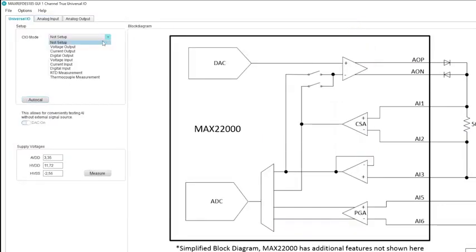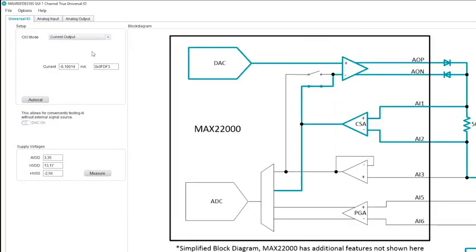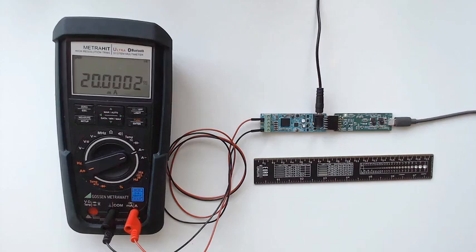And now let's select current output mode. We drive 20 milliamps. Okay, so now you can see on the current meter we reach 20 milliamps.